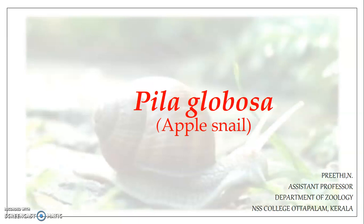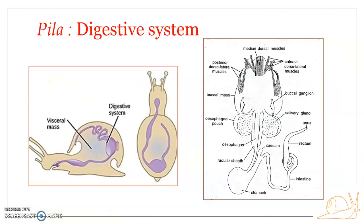Hello everyone, welcome to a new session on Pila globosa. This presentation brings you detail on the digestive system. In the coming presentations, we will be discussing the alimentary canal, its structure, the digestive glands, and the process of digestion. The digestive system is composed of the alimentary canal and associated digestive glands.